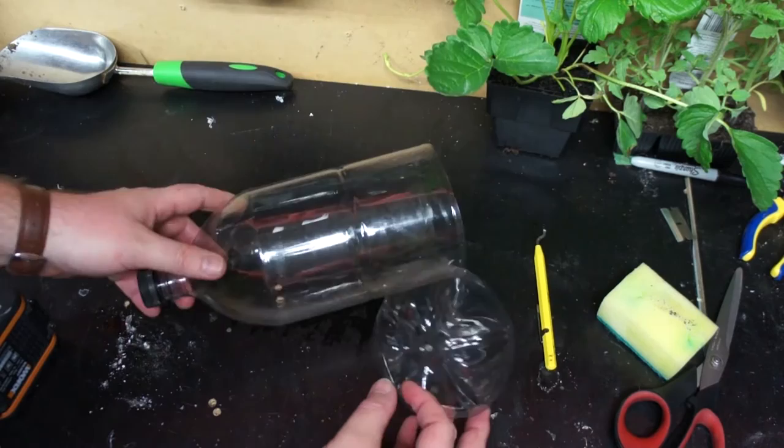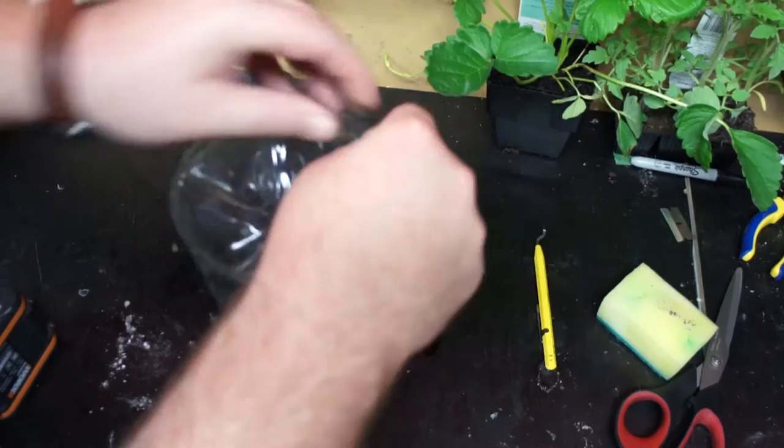The bottom is going to form the top. What we're going to do is actually invert this and insert it into the bottle, and this creates a funnel for watering later on which we'll see.